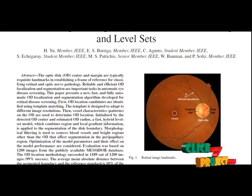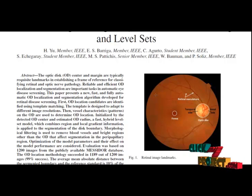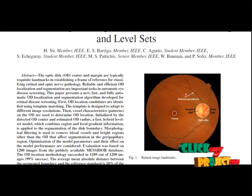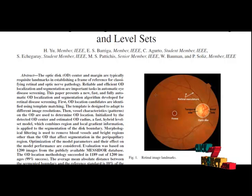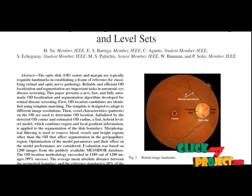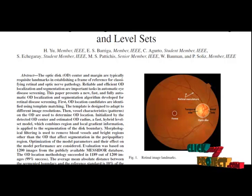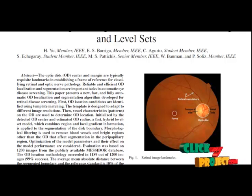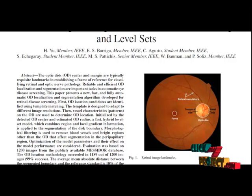Using the detected OD center and estimated OD radius, a fast hybrid level set model which combines region and local gradient information is applied to segment the disk boundary. We use morphological filtering to remove blood vessels and bright regions other than the OD that affect segmentation in the peripapillary region.